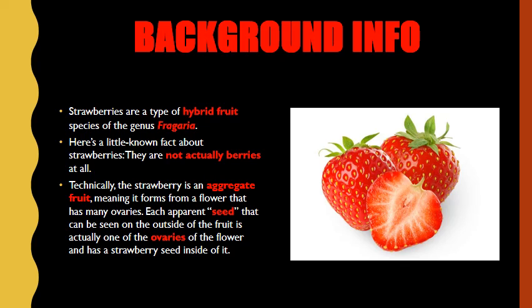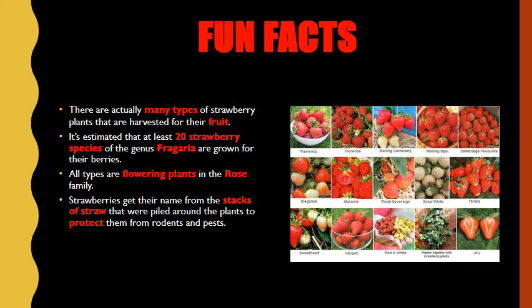Take a look at the picture — a whole strawberry and a strawberry cut in half. Now it's time for a few fun facts. There are actually many types of strawberry plants harvested for their fruit. It's estimated that at least 20 strawberry species of the genus Fragaria are grown for their berries. All types are flowering plants in the rose family. Strawberries get their name from the stacks of straw that were piled around the plants to protect them from rodents and pests.